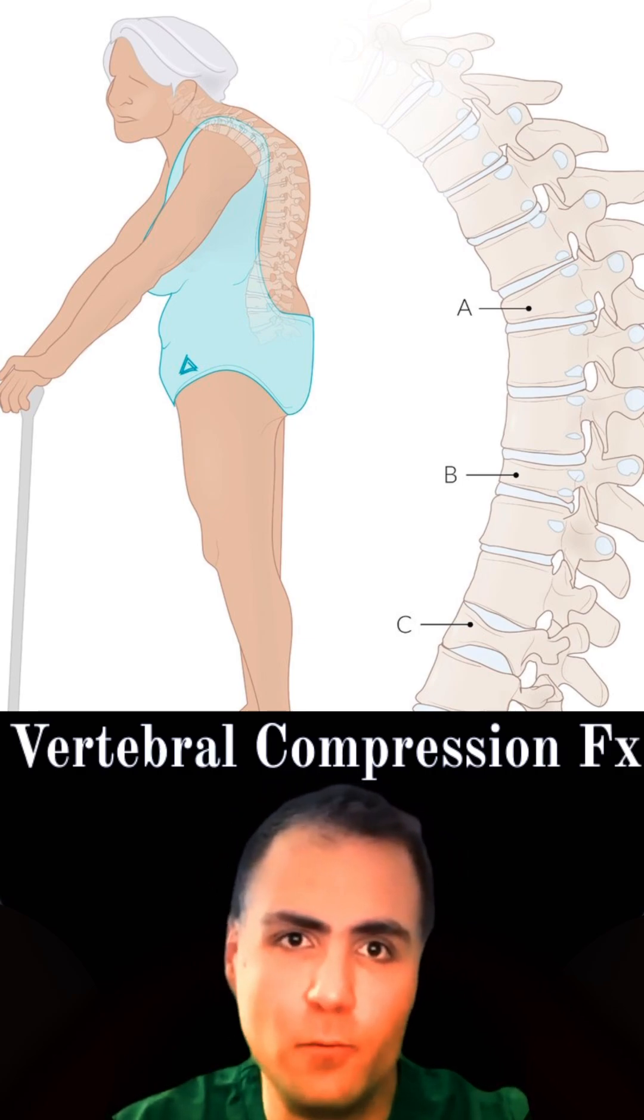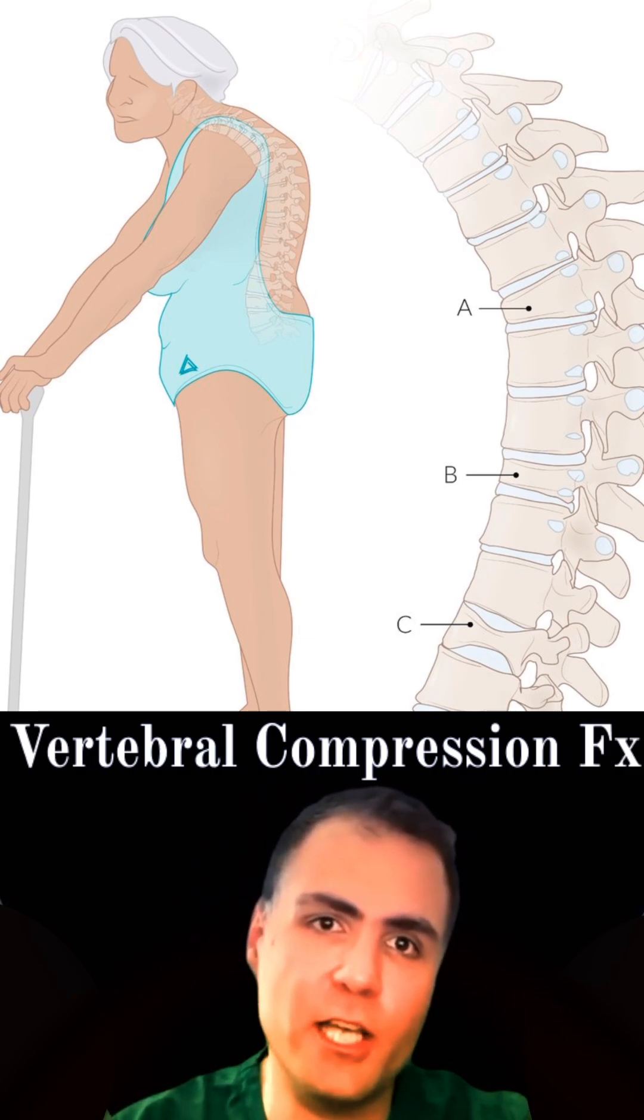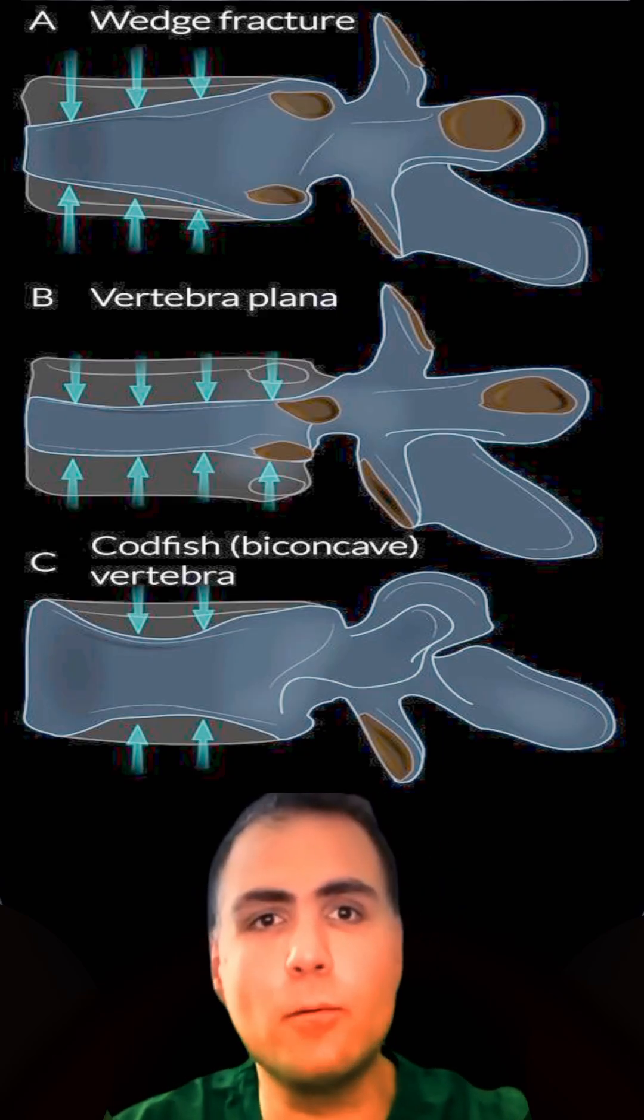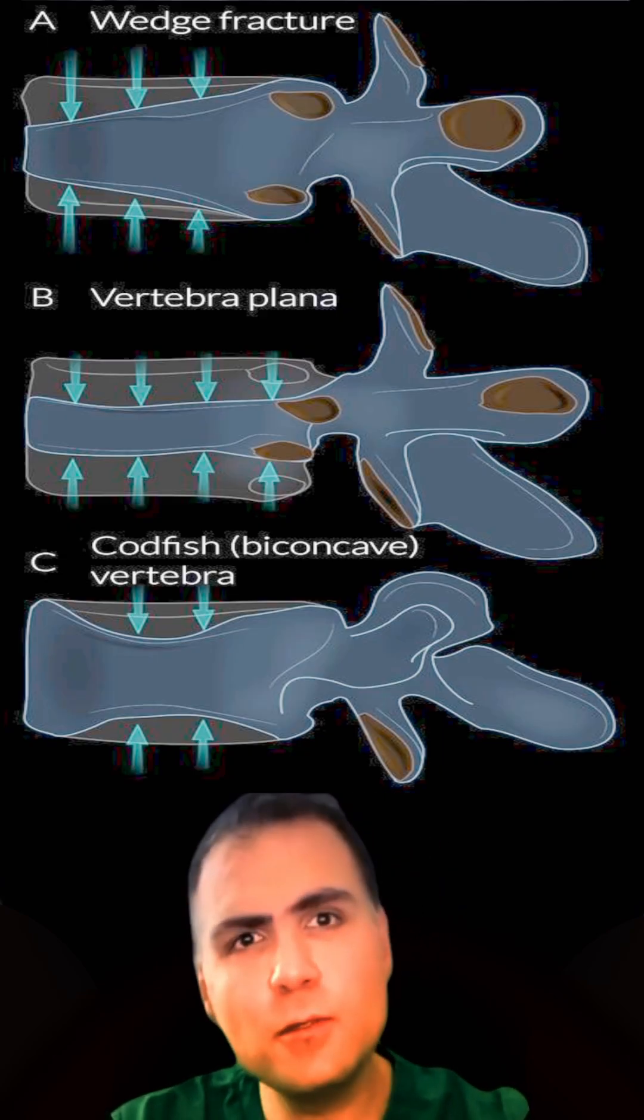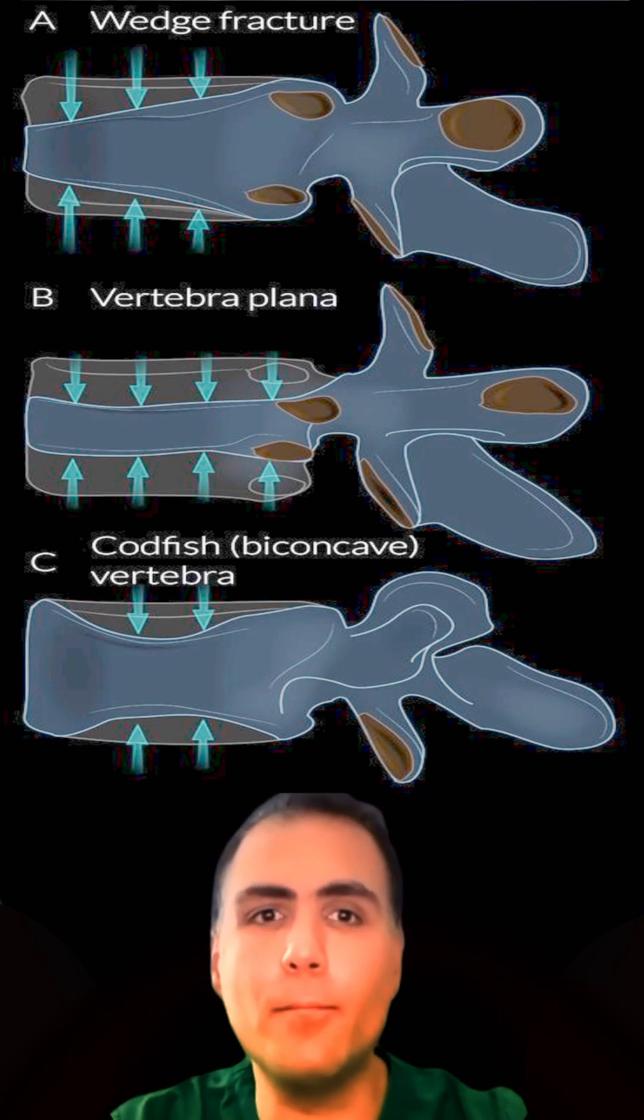Typically caused by axial loading with flexion, compression fractures can appear as wedge fractures, vertebra planar, uniform height loss, or codfish vertebrae with biconcave shape.